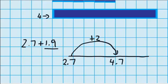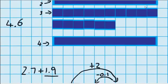But of course, I only had 1.9 so jumping up 2 was a little bit much. So what I have to do is fix that mistake by taking off that 0.1 or 1 tenth that I added. 4.7 minus 0.1 is 4.6. And you can see that's the same answer we got when we used the materials.